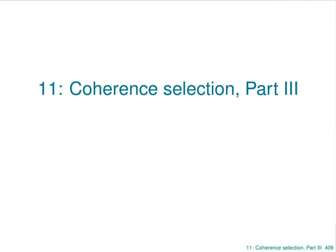This is the third and rather short selection about coherence selection, which is really picking up on two additional things that you can do with gradients, which are a little bit different to simply selecting coherence transfer pathways. But these have turned out to be rather useful in practical spectroscopy.